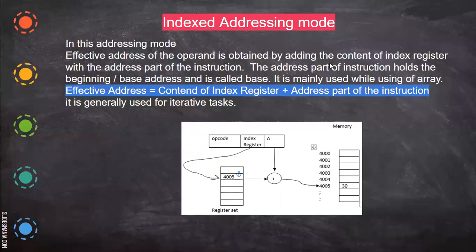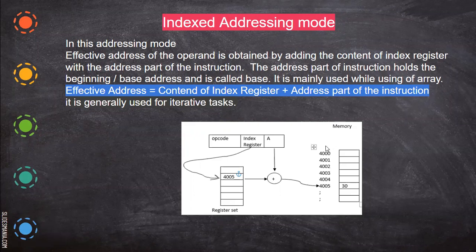Now the next one is indexed addressing mode. This is mostly used while you are using an array. So here the index register content also will be there, and this is an address part.